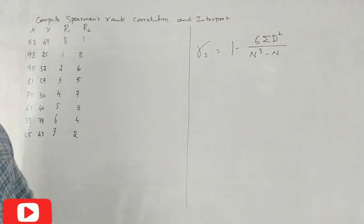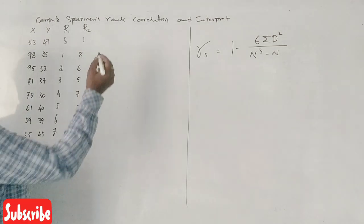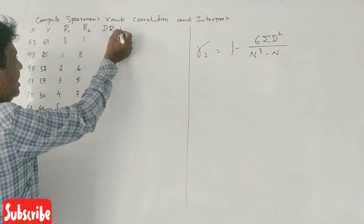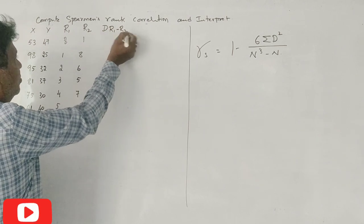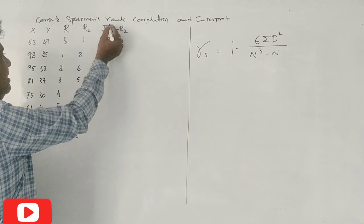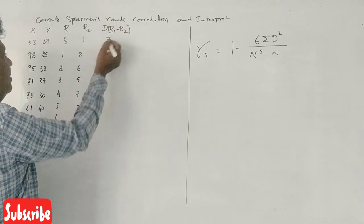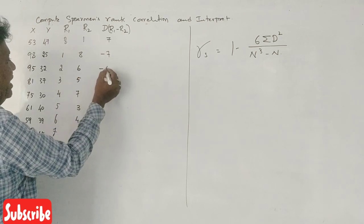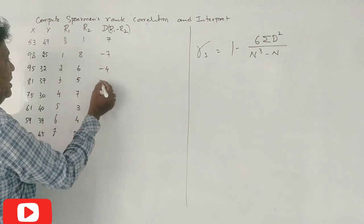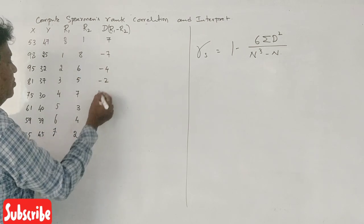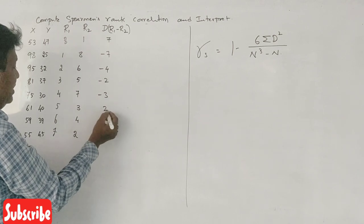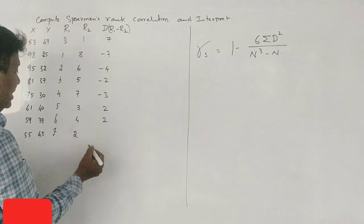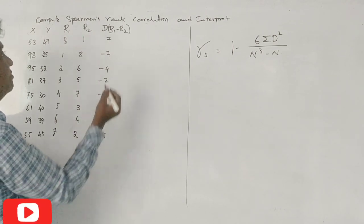This rank is 1. This is D1. B1, R1 minus R2. 8 minus 1 is 7. 1 minus 8 is minus 7. This is minus 4. This is minus 2. This is minus 3. This is minus 3. Plus 2. Plus 2. This is plus 5.